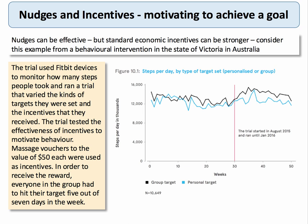Sometimes a nudge requires an incentive — especially when there's a strong default, people need an incentive. A good example from Australia used Fitbit devices to monitor how many steps people took in a trial estimating the effectiveness of incentives to motivate behaviour. One group was set a personal target; another group was offered $50 massage vouchers as an incentive, and there was quite a significant effect in terms of increasing steps taken. Sometimes offering a combination of technology and incentives can be a powerful intervention.